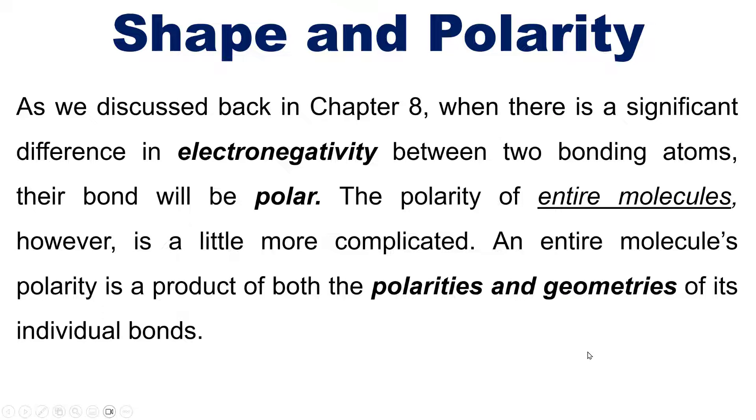In other words, there are times when you might have an individual bond that is polar by itself, but the overall molecule as a whole is not because the polarity of one bond ends up canceling out the polarity of another bond on the opposite side. So the net polarity ends up being zero. Makes sense?